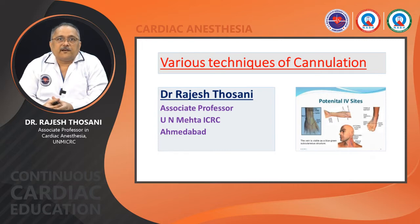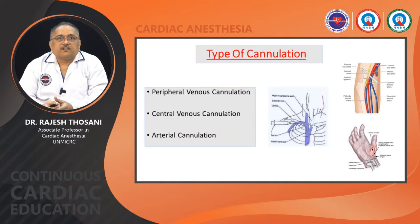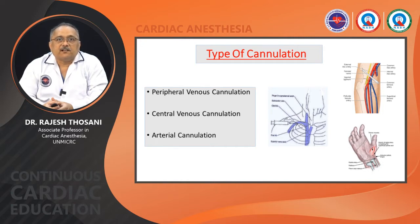We will start with peripheral venous circulation, then central venous circulation, and finally arterial cannulation. In central venous cannulation, we will cover triple lumen insertion as well as pulmonary artery catheter insertion — their benefits, techniques, and the latest equipment available.